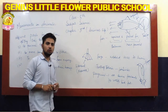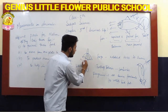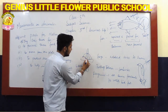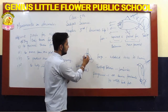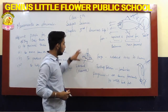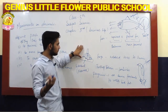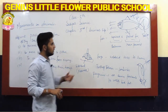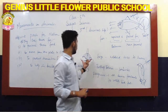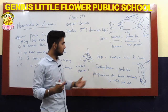Frogs have webbed toes. As you can see when you look at a frog, there is a network-like structure called webbing, which helps them float, swim, and move forward both in water and on land.